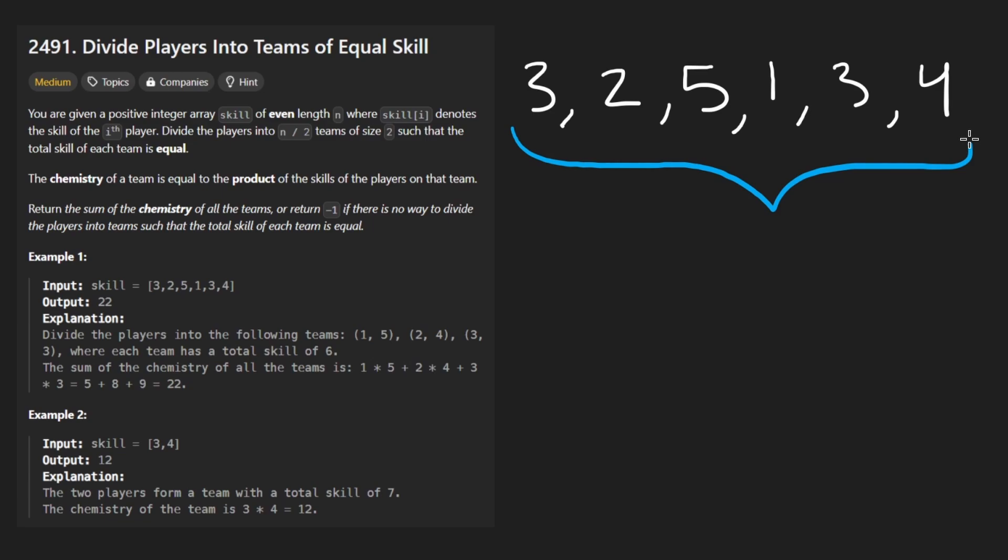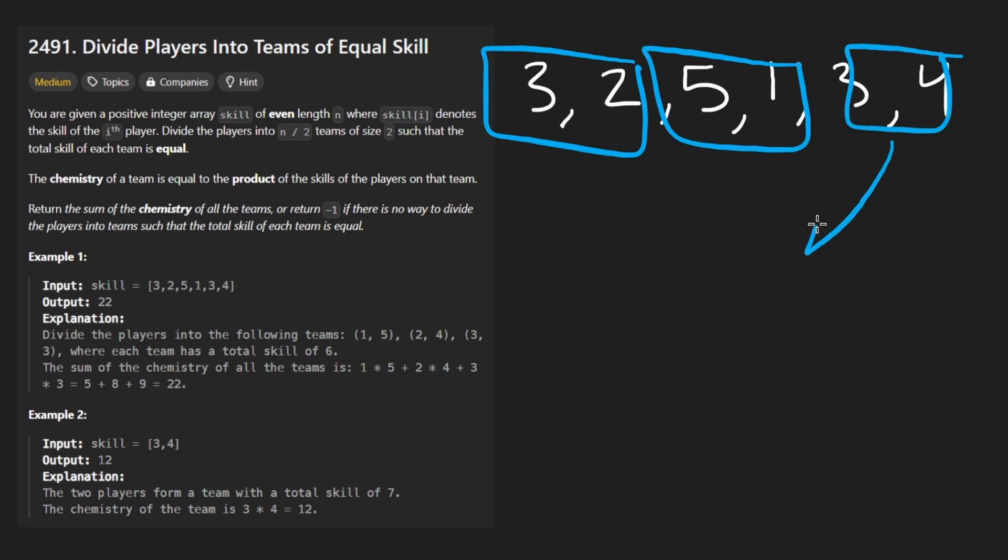So we're given a set of numbers, each of these corresponds to a person's skill level. We want to partition this into groups of two, they can be chosen however we want, they don't have to be adjacent. But every single group of two has to have the same sum. Not the two individual elements need to be equal, but the sum of this and this and this have to be the same.